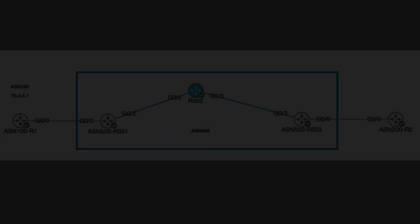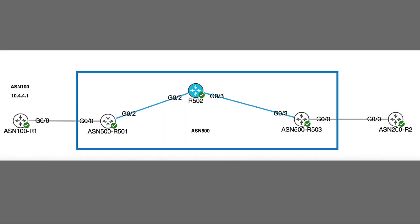The IBGP Split Horizon Rule is a mechanism used to avoid routing loops. When a BGP speaker receives an update message from another BGP peer located in its own autonomous system number, the receiving BGP speaker shall not distribute the routing information contained in that BGP update to other BGP speakers located in its own autonomous system number. In other words, routes received from an IBGP neighbor cannot be advertised to another IBGP neighbor.